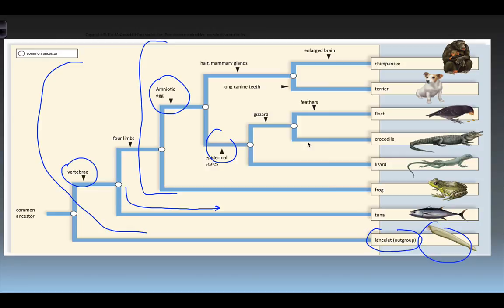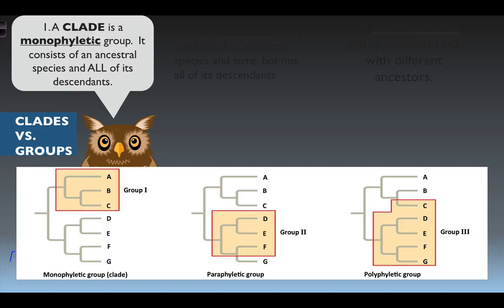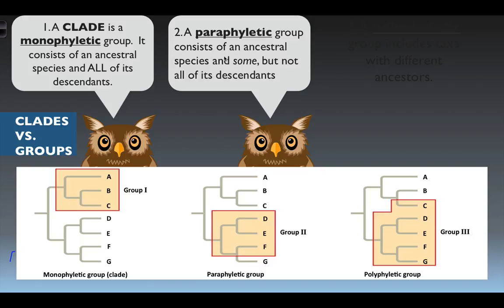Two terms to understand are clades and groups. A clade is a monophyletic group — it consists of all ancestral species and all of its descendants. So if we're studying animals A, B, and C in group one, this is a clade because all ancestral species and all descendants are listed. A paraphyletic group consists of an ancestral species and some but not all of its descendants. In group two, with animals D through G, G has been left out — so this is not a clade.